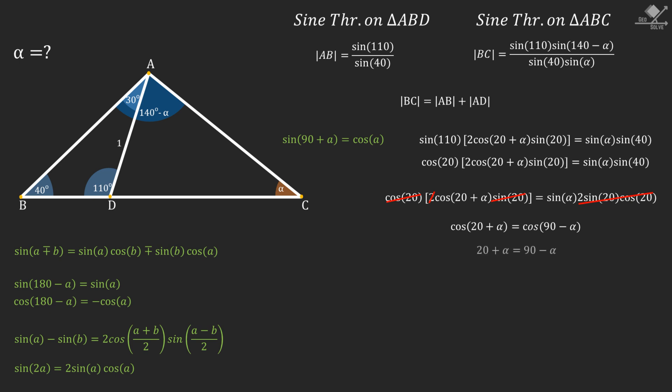From here, 20 plus alpha will be equal to 90 minus alpha. So finally we can find alpha as 35 degrees. And that is our answer. I'll see you next time.